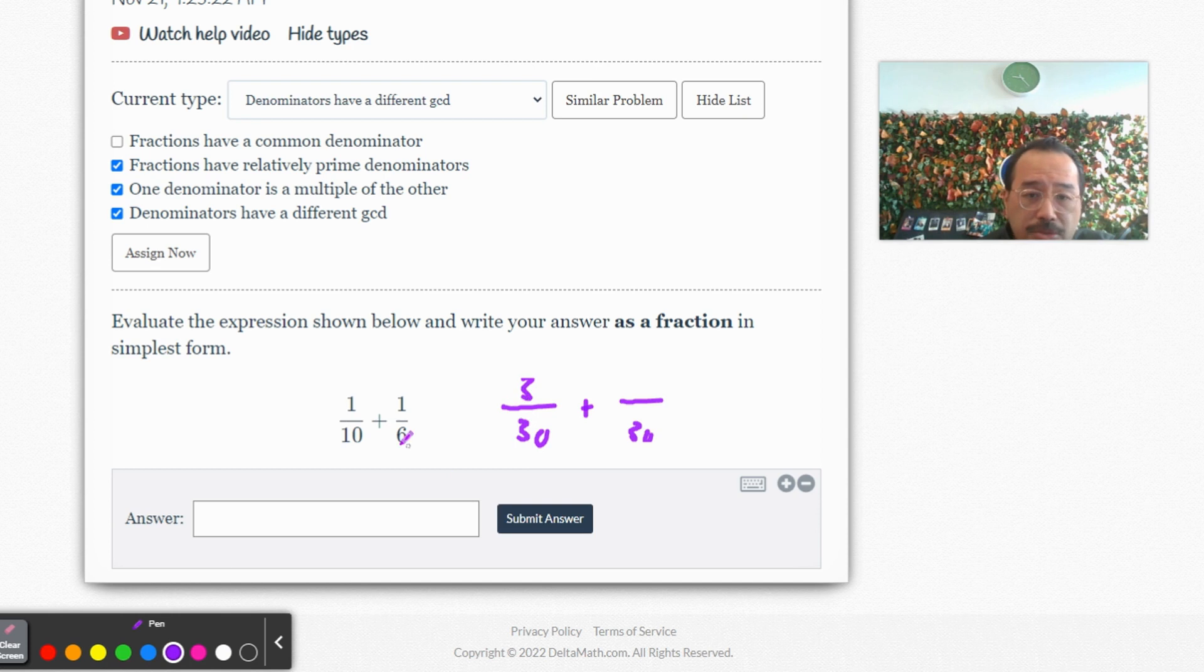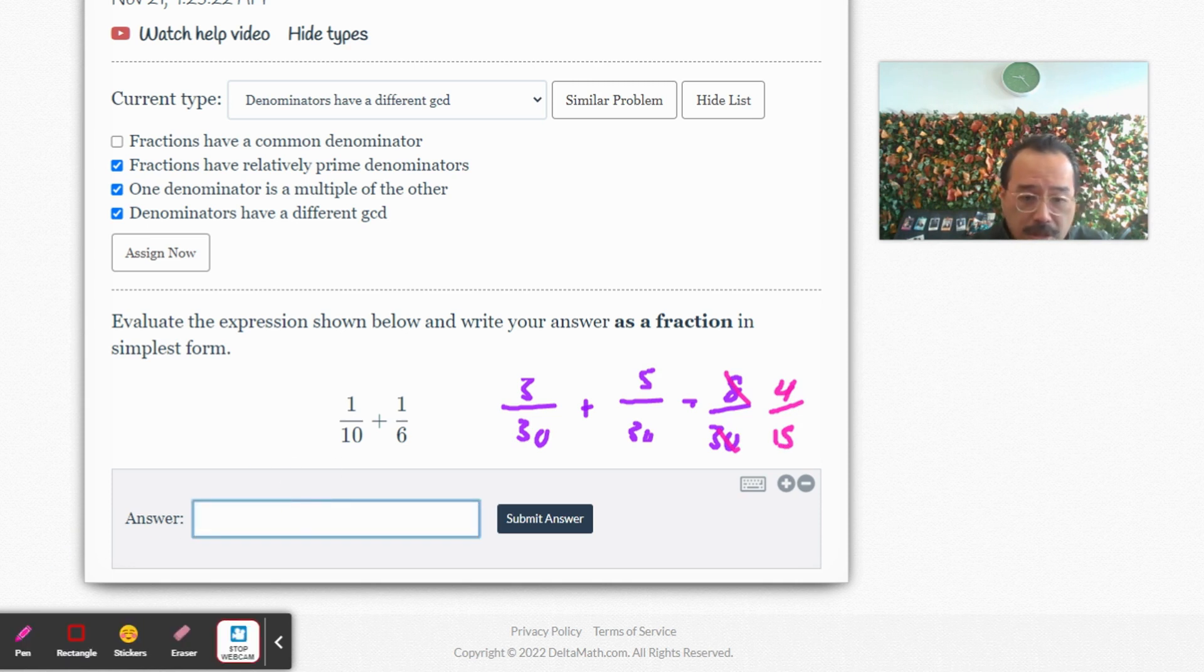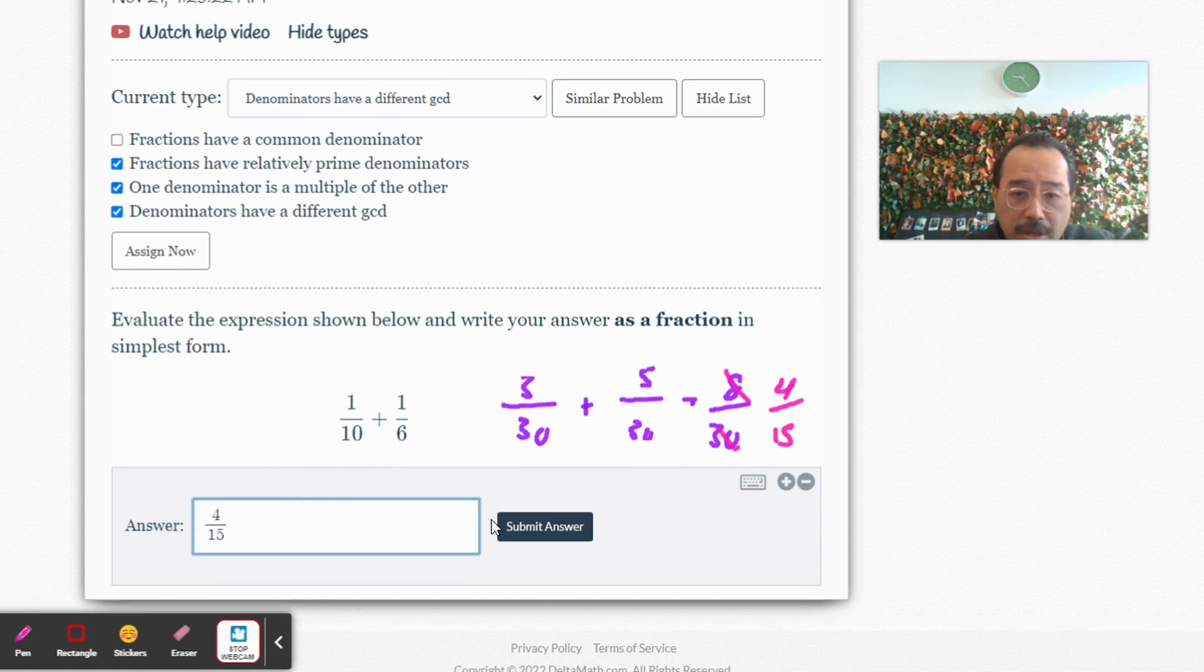So 10 times 3, so 1 times 3 is 3, 6 times 5, so that's 5. That's 8 over 30, which means I got to reduce. So let's see, 4/15. And that's it, okay.